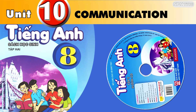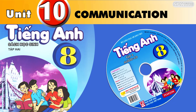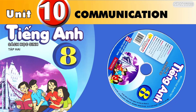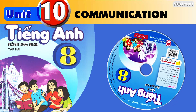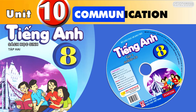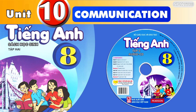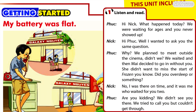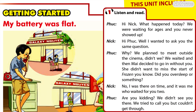English 8 Book 2 Unit 10: Communication. Getting Started, Activity 1: Listen and read.